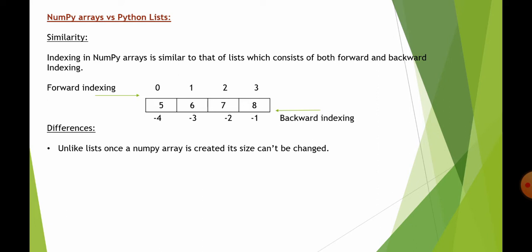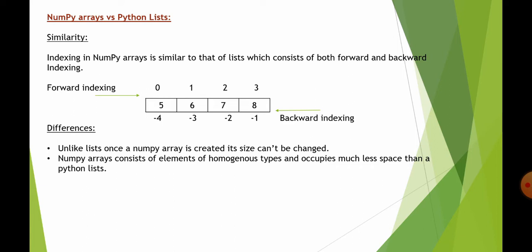Unlike lists, once a NumPy Array is created, its size can't be changed. In lists, we were able to manipulate the size of a previously created list. But in the case of an array, we are not able to change the size. We have two options: either override the existing array or create a new one. Also, NumPy Arrays consist of elements of homogeneous types — that is, similar types — and occupy less space than a Python list. In lists, elements could be of the same or different types, so homogeneity was not an issue. In NumPy Arrays, all elements must be of similar data types.